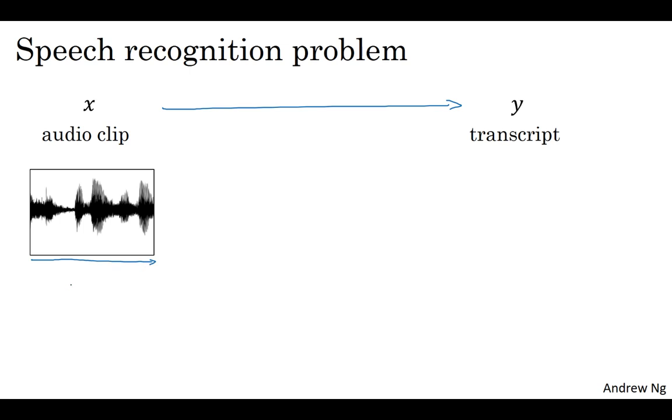The horizontal axis here is time, and what a microphone does is it measures minuscule changes in air pressure. The way you're hearing my voice right now is that your ear is detecting little changes in air pressure, probably generated either by your speakers or by a headset. An audio clip like this plots basically air pressure against time.